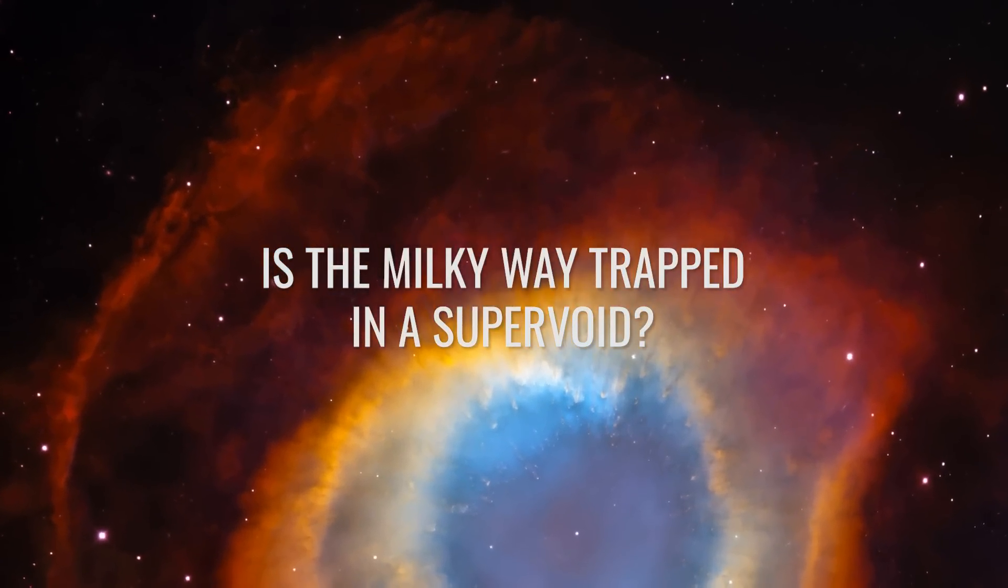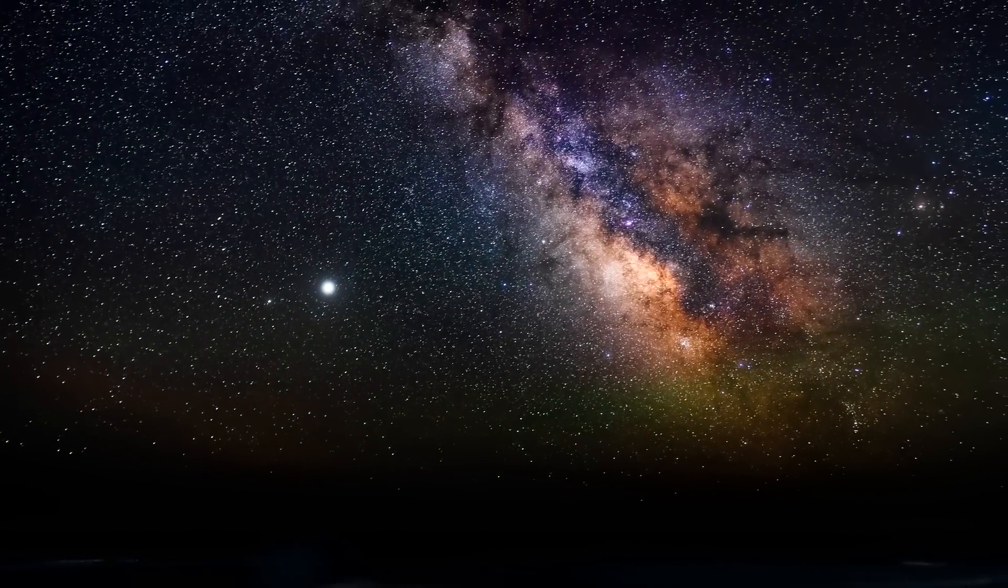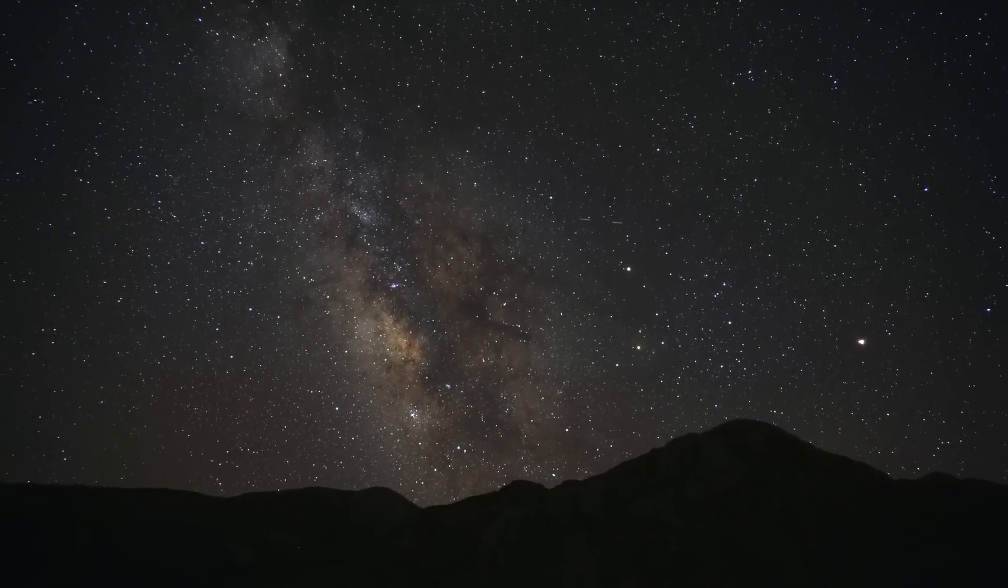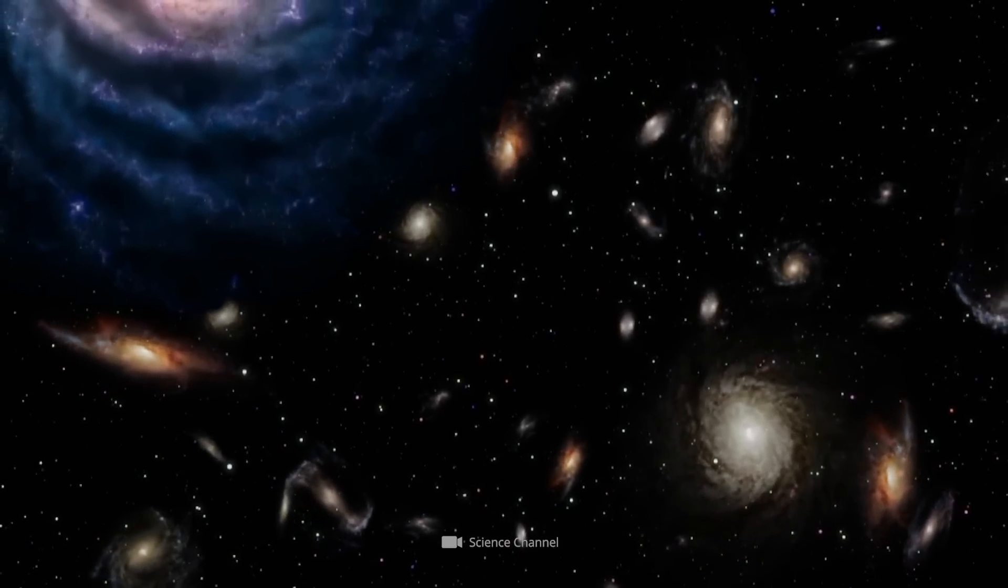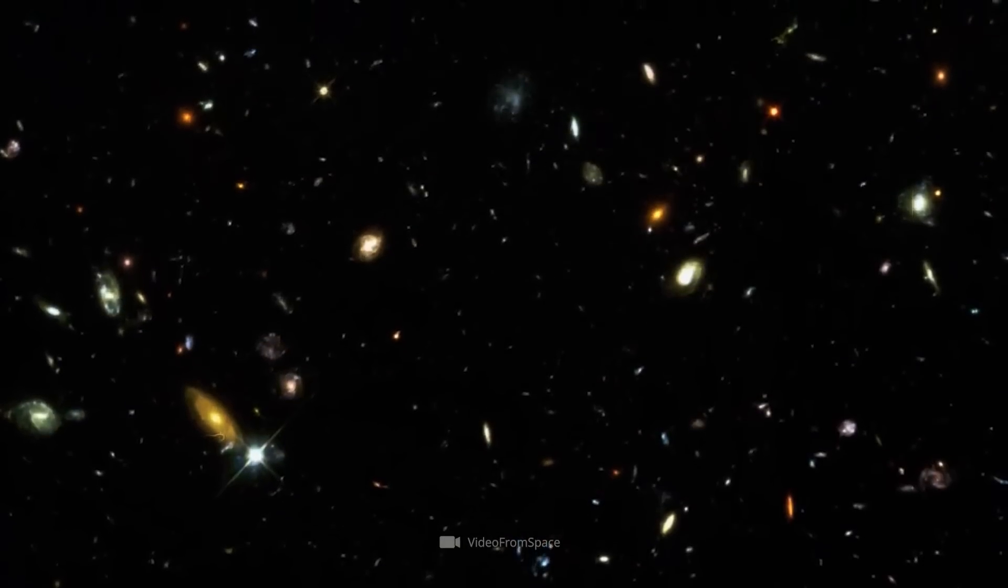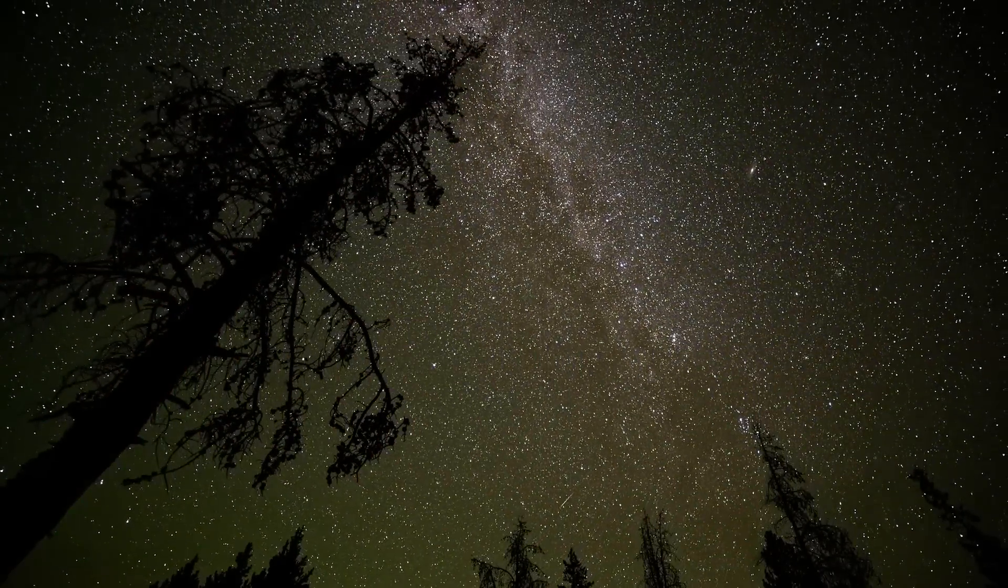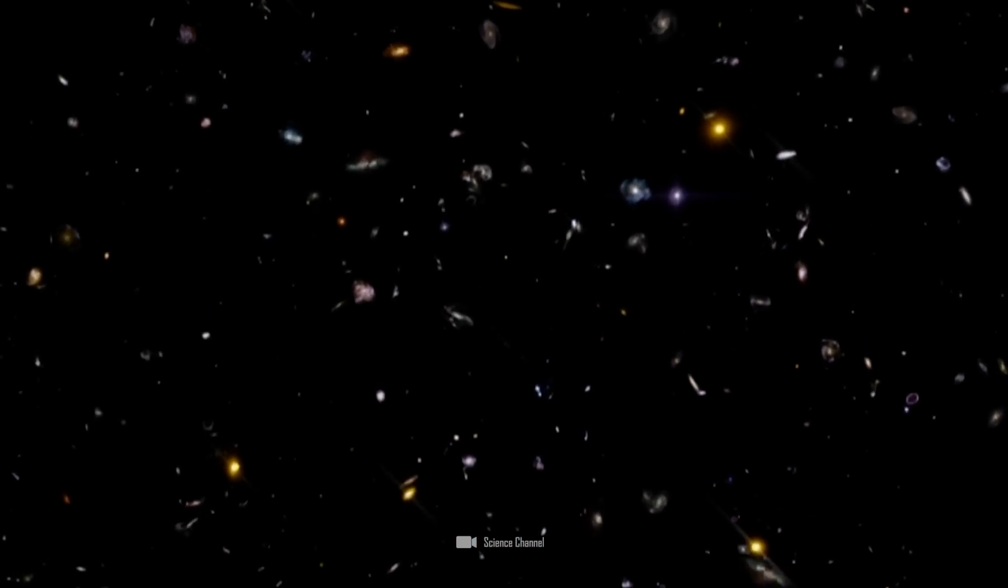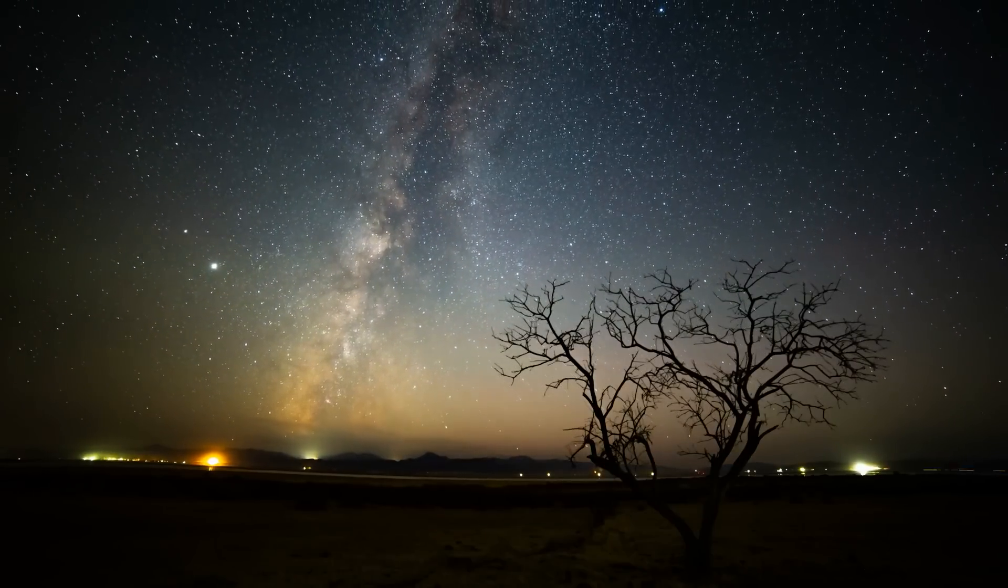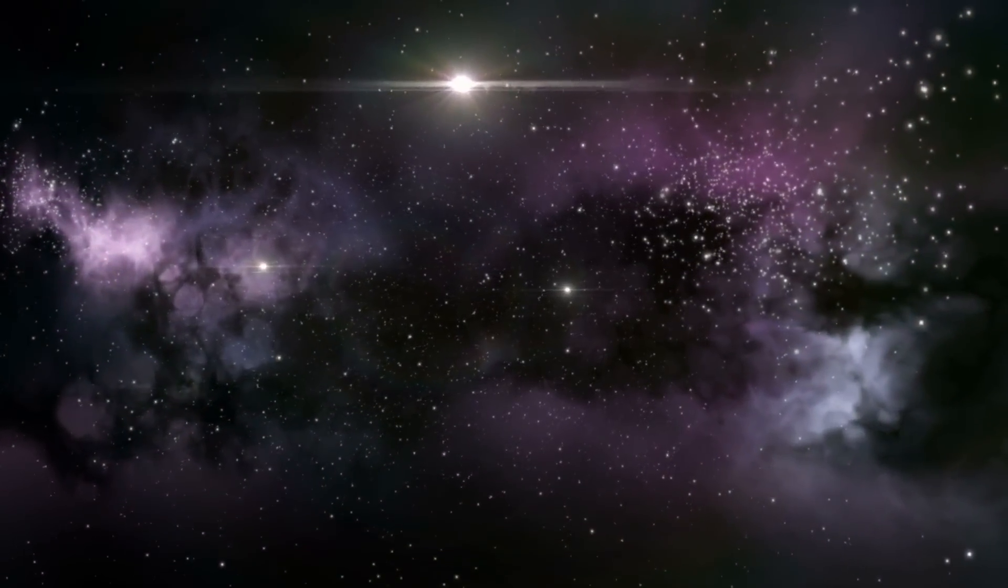Is the Milky Way trapped in a supervoid? To understand what this gigantic void is all about, we first have to recall the overarching structure of the universe. As is well known, stars and planetary systems are found in galaxies, which in turn combine to form galaxy clusters and can form superclusters. For a long time, researchers saw the largest coherent structures in the universe in such superclusters. But then the large-scale surveys showed that the superclusters are by no means randomly distributed in space, but rather arranged in a network-like structure. The lattice of this structure is formed by long fibers, known as filaments, which can be several hundred million light-years across. In the same breath, the filaments also span gigantic, virtually matter-free bubbles, the so-called voids.